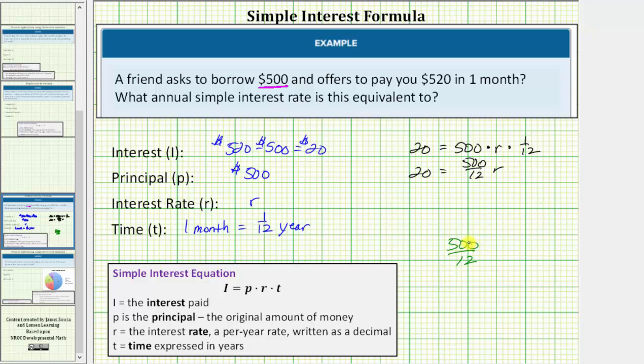The greatest common factor between the top and the bottom is four, so we'll divide the top and bottom by four, which gives us 125 thirds. So now let's write the equation as 20 equals 125 thirds R.